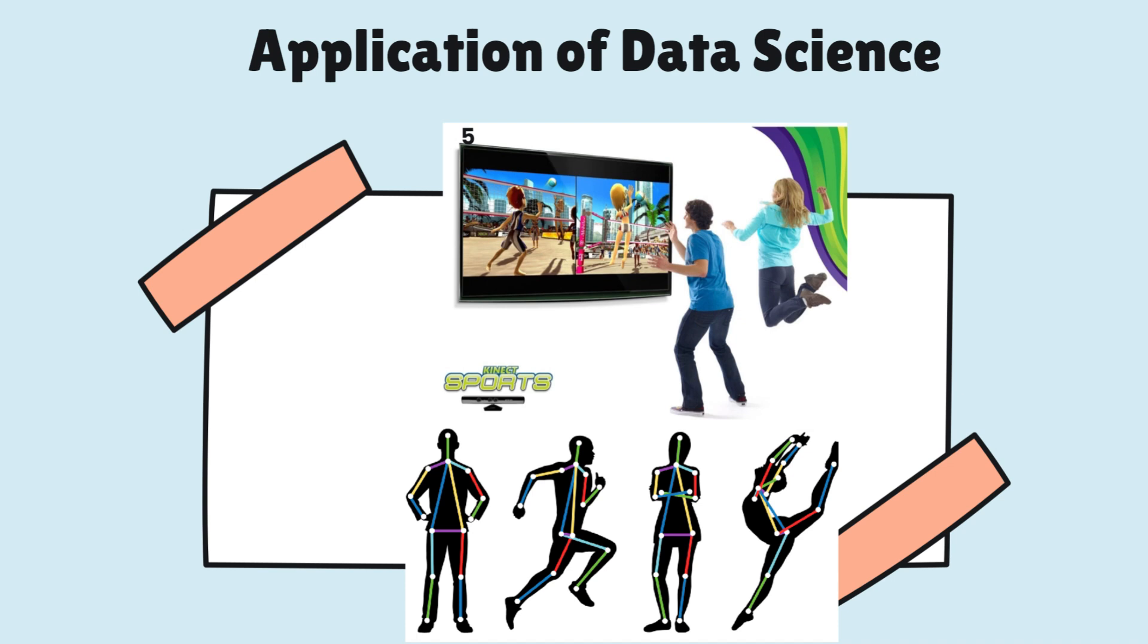Next, Kinect Sports uses webcam to detect user postures and allow them to play games. You might have played this game in the mall or in the gaming zone. This uses data science random forest algorithm to detect postures and allow users to play games. In this course, we are going to make a simple version of this and we will also be able to play games.